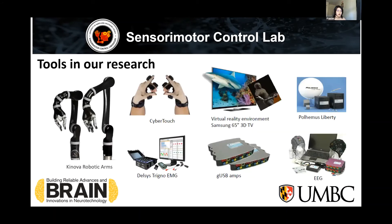We have several devices in our lab. We have robotic arms — we just got them this semester — and we would like to use them for neural signal control, like EEG or EMG control. For motion capturing, we have a motion tracking system with sensors attached on the upper limb or even the trunk. For hand movement capturing, we have several gloves to record changes in hand joint angles. We also have EMG and EEG systems to record neural signals.